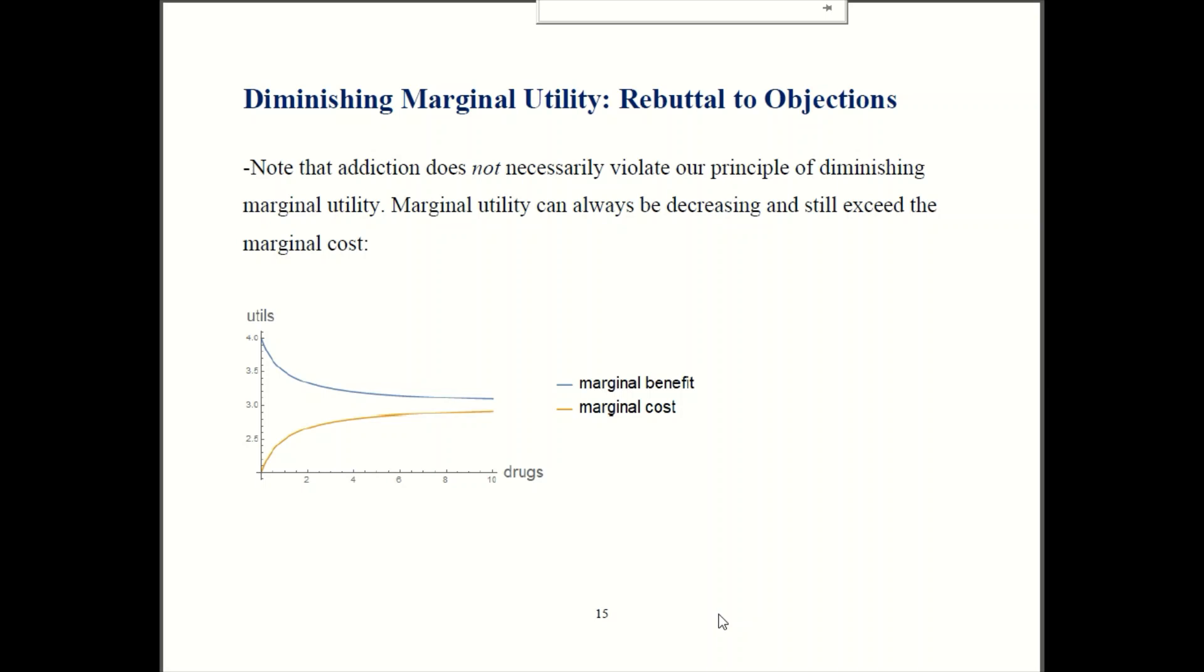So let's say that the marginal utility from drugs is given by this blue line over here and sure enough it is diminishing as diminishing marginal utility tells us. But perhaps it's diminishing asymptotically. And the marginal cost of doing drugs could be rising asymptotically. It could be such a way that even though these curves are always getting closer and closer and closer together they never quite meet. So for this person even though they have diminishing marginal utility, the benefits of doing drugs always exceed the cost. So they keep doing drugs more and more and more and they fall into addiction.